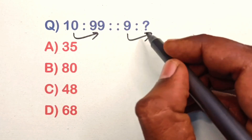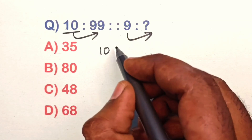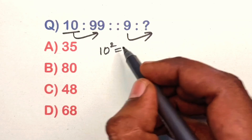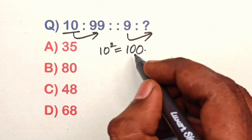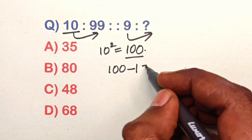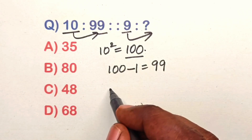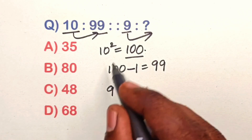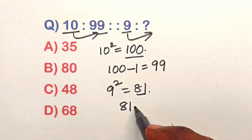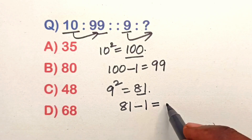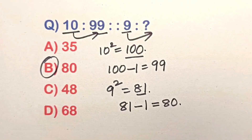Find the relation in this analogy question. Take 10: 10 squared is 100 — then 100 minus 1 is 99. Same way, take 9: 9 squared is 81 — 81 minus 1 equals 80. Option B is the correct answer.